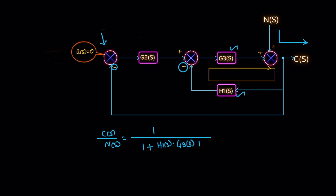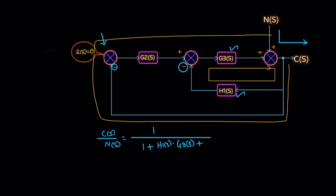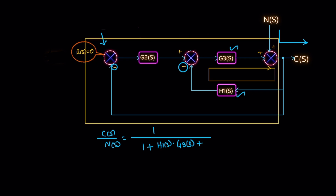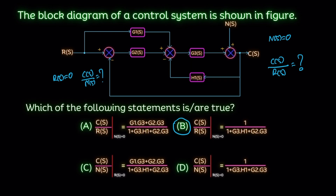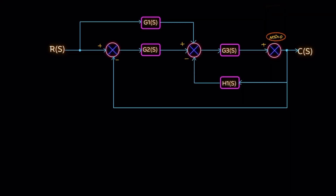The second feedback path is also negative, so the feedback is negative, giving the product of the path gain values G2(s) and G3(s). So the answer for this case where R(s) = 0 is confirmed. Next, for Case 2, if N(s) = 0: